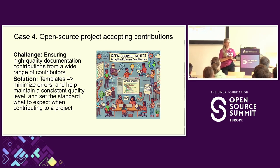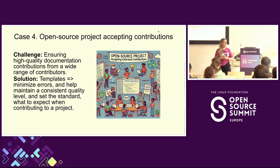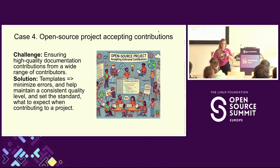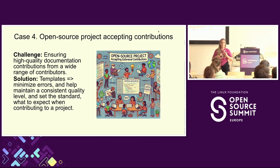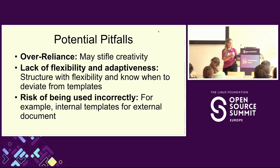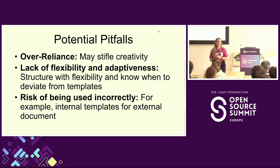The fourth case is about open source projects accepting contributions. The difference from the first case is that here you have external contributors, so you need to communicate even better what is expected from a contribution. Templates help minimize errors and maintain consistency, and they set a standard — you can make templates for issues, for pull requests — so contributors know what to expect and what the contribution process looks like.